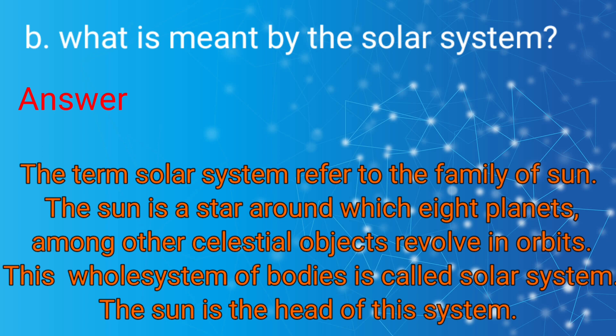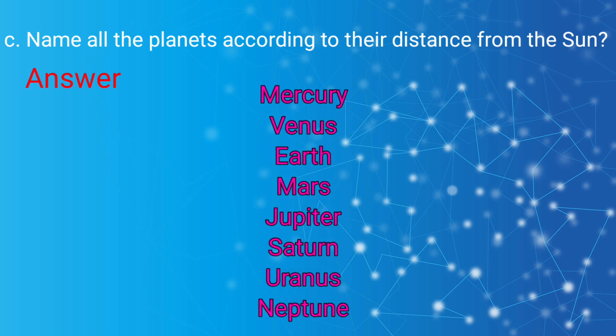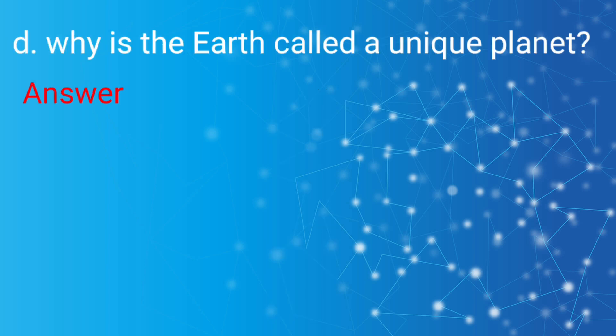C: Name all the planets according to their distance from the Sun. Answer: Mercury, Venus, Earth, Mars, Jupiter, Saturn, Uranus, Neptune.